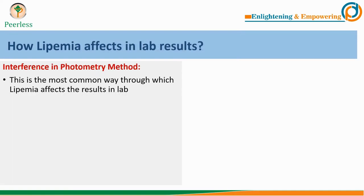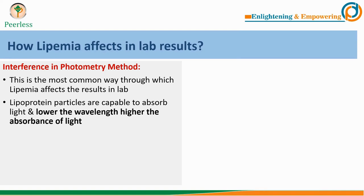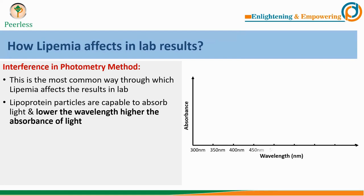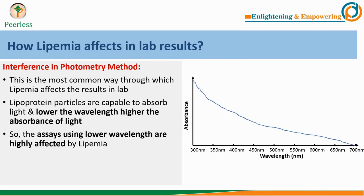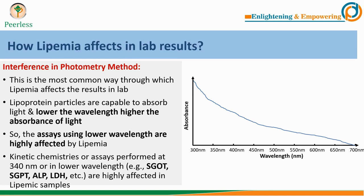Secondly, lipemic samples cause high interference in photometry methods — this is the most common way lipemic samples affect lab results. Lipoprotein particles can absorb light, and interestingly, the lower the wavelength used for the test, the higher the absorbance. Assays using lower wavelengths are highly affected by lipemic samples. All kinetic assays at 340 nanometers or lower wavelength, such as SGOT and SGPT, will give incorrect results if the sample is highly lipemic.